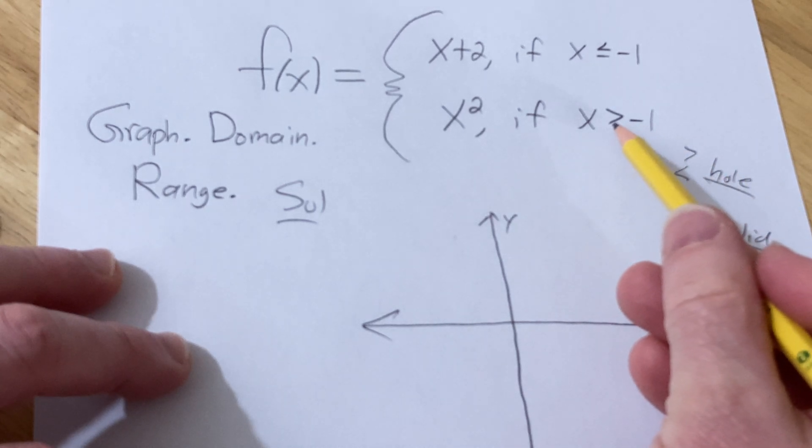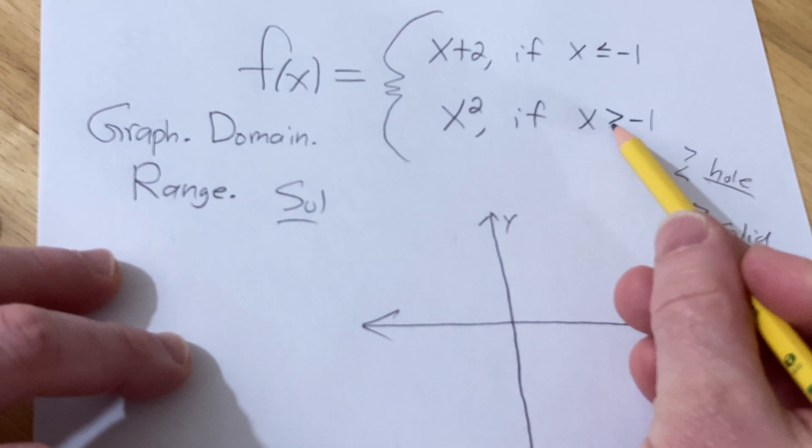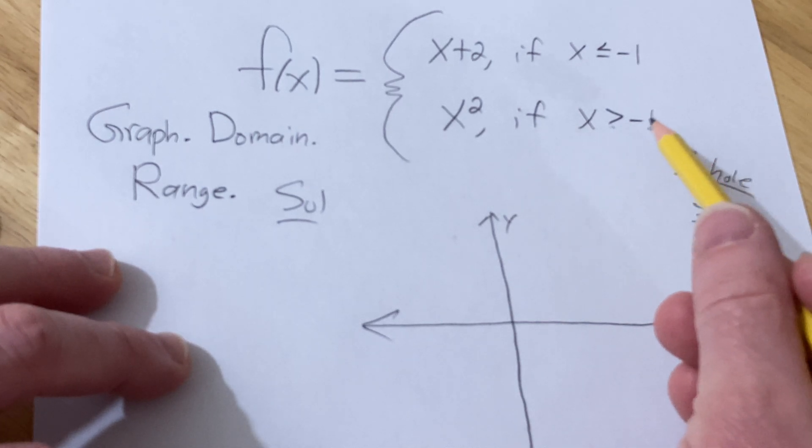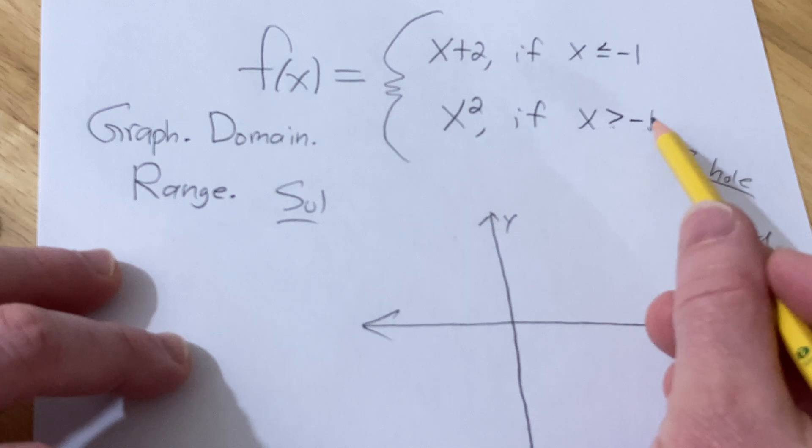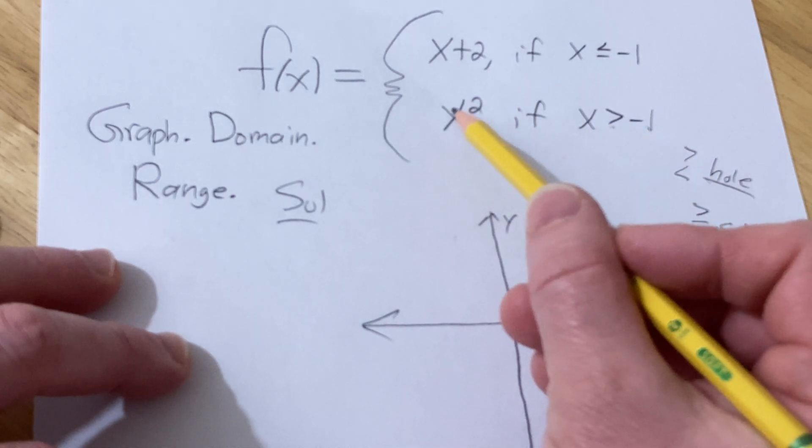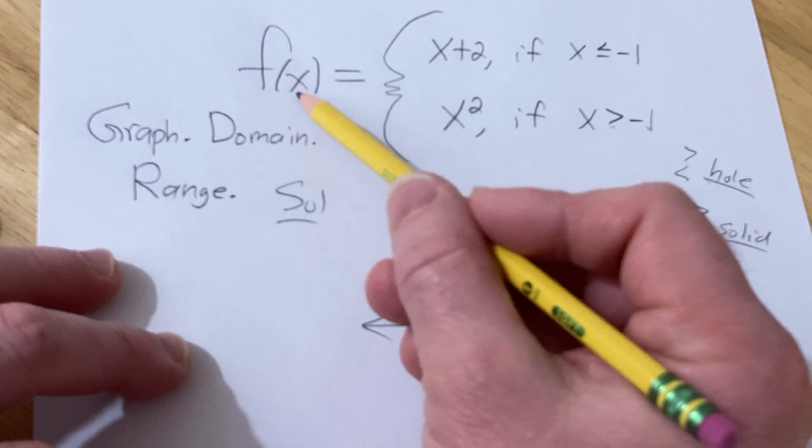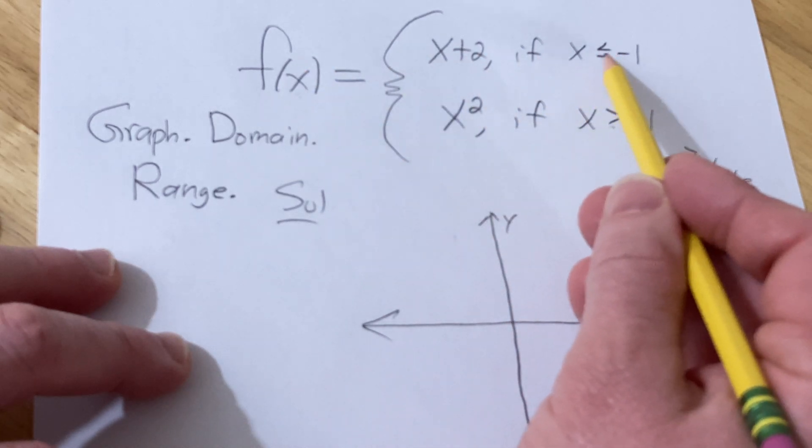Let's start with this one. We know there's going to be a hole at x equals negative 1, but to find the y-value of the hole, you take negative 1 and plug it in here. Now you're not supposed to do that, right? But technically, when you plug in negative 1 into this function, you're supposed to be looking here.